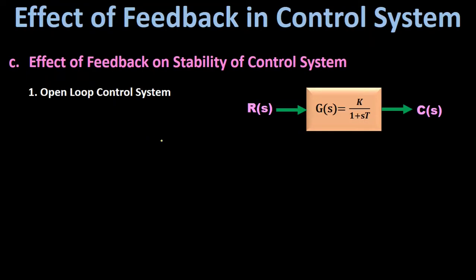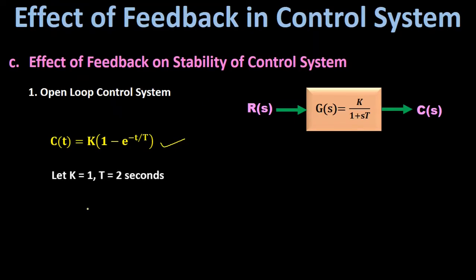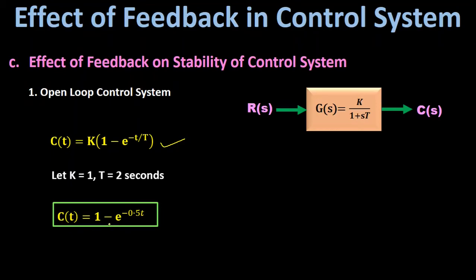First, we take the open-loop control system. This is the block diagram representation of the open-loop control system. Here the forward-path transfer function G(s) is equal to K divided by 1 plus S·T. For such a system, the output response C(t) equals K into 1 minus e to the power minus T by T, which was derived when we discussed the effect of feedback on time constant.